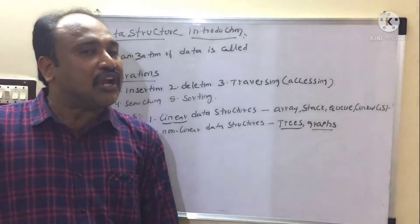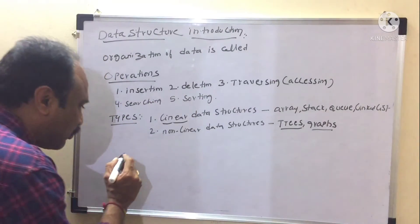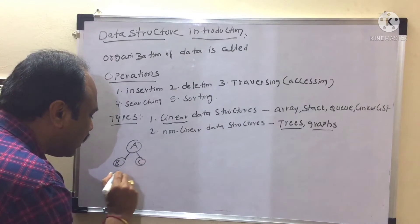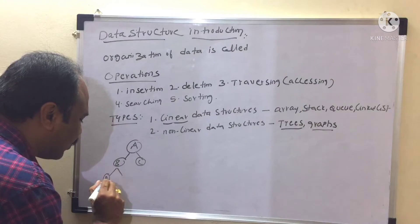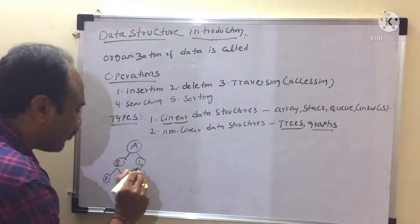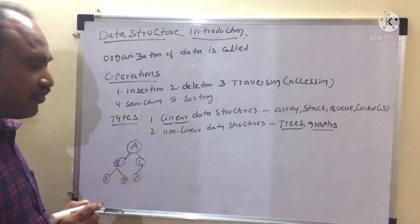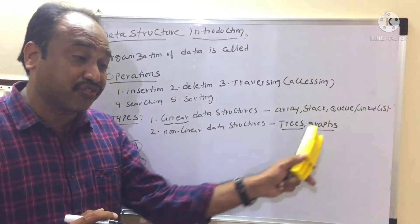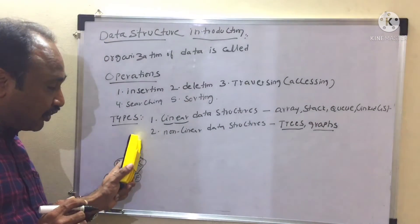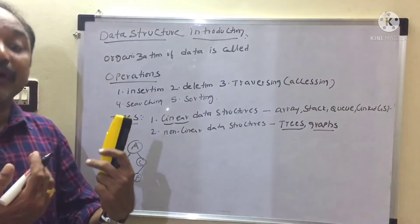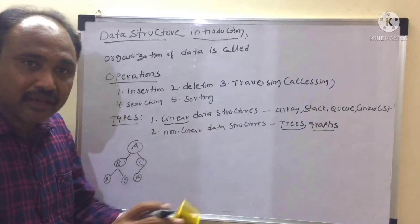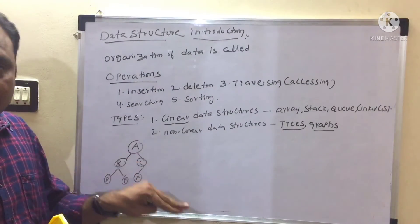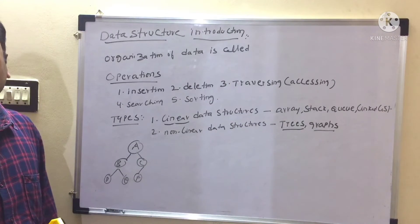Of course, we are going to use linked list only to implement trees and graphs. But when I am going to store and access data — for example, I want to store data in a tree structure like A, B, C, D, E, F — I am not accessing in sequential manner. In a zigzag manner I am accessing in the case of trees and graphs. To implement trees and graphs we use linked list, but while storing and accessing I am not following a sequential approach. Hence they are referred to as non-linear data structures.